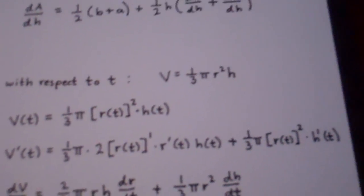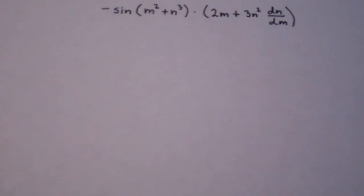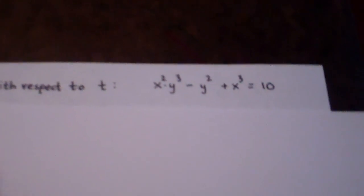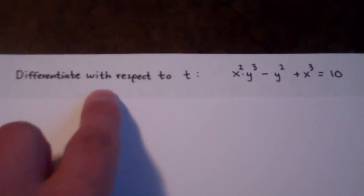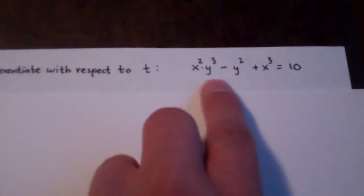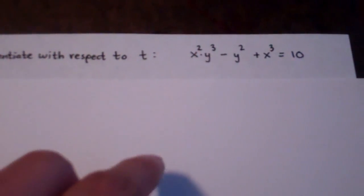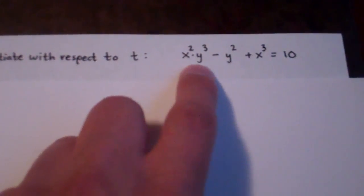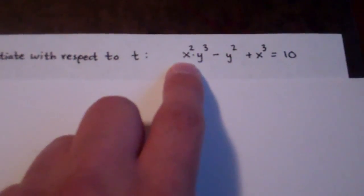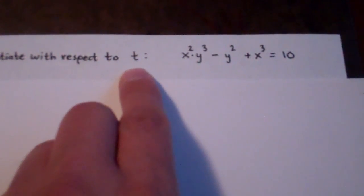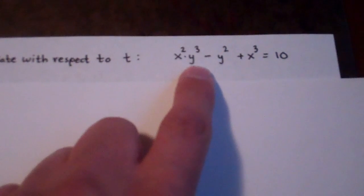So let's look at two more examples and try to do them without changing all the variables into function notation. Let's take this formula and differentiate with respect to t. Notice there's no t in the equation, but that's okay — we just treat every variable as though it's a function of t. Any time we take the derivative of something involving x, we multiply by dx/dt; and any time we take the derivative of something involving y, we multiply by dy/dt.